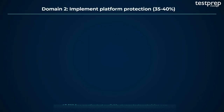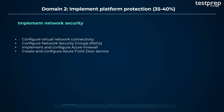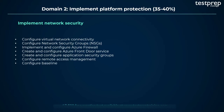Second, implement platform protection. Number 1: Implement network security. It contains eight subtopics: configure virtual network connectivity; configure network security groups; implement and configure Azure firewall; create and configure Azure front door service; create and configure application security groups; configure remote access management; configure baseline; and enable resource firewall.